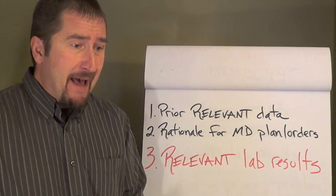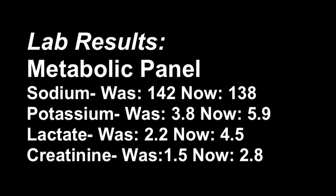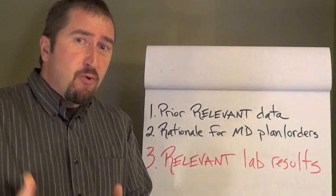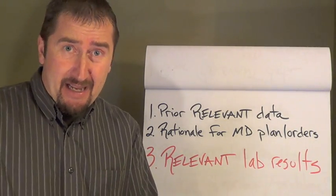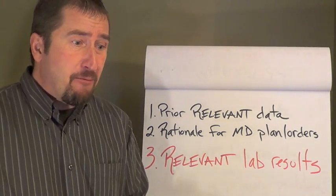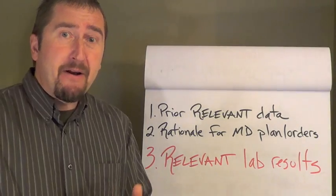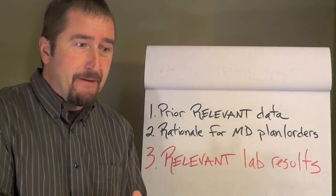Our basic metabolic panel results come back. And the K went from 3.8 to 5.9, and our creatinine has went from 1.5 to 2.8. Is there a relationship between an elevated creatinine and an elevated potassium? Absolutely. And we see it all the time in practice. As the kidneys are impaired, potassium does not get filtered.